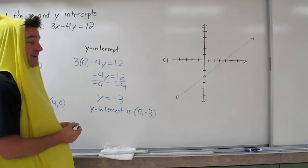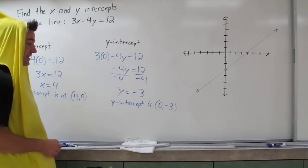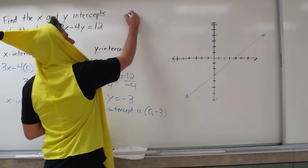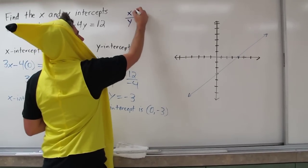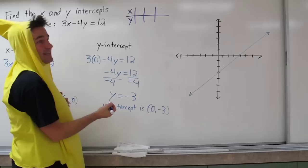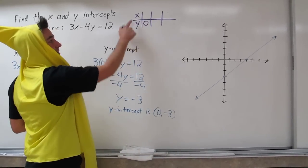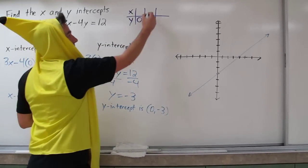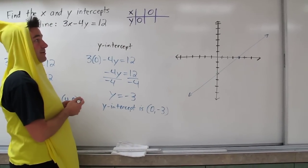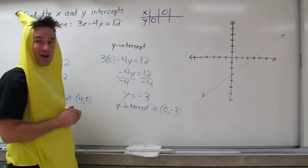Now, if you're used to doing x-y tables, there's one more way we can calculate the x- and y-intercepts. When you make an x-y table, you simply need to find out what's the value of x when y equals 0 — that will tell you the x-intercept — and what's the value of y when x equals 0, which will tell you the y-intercept. Alright, good luck.